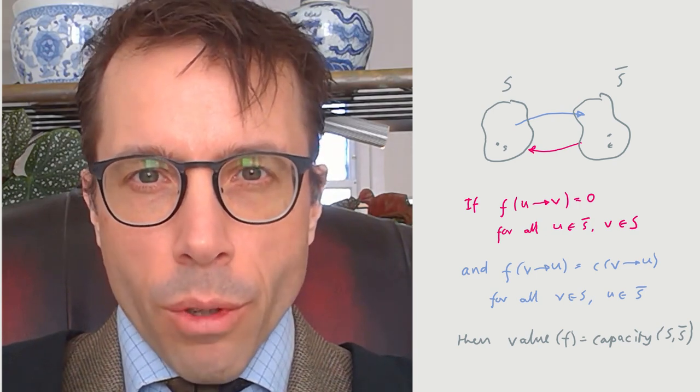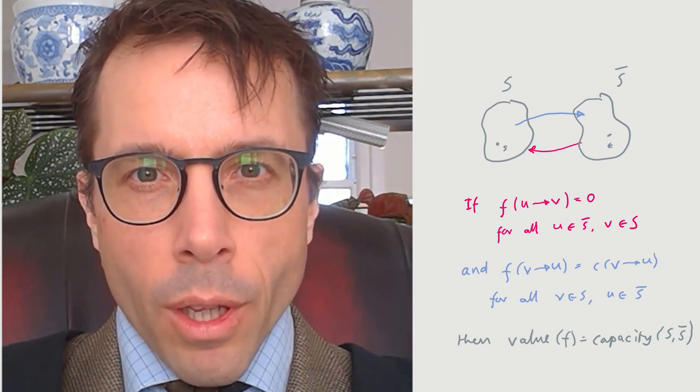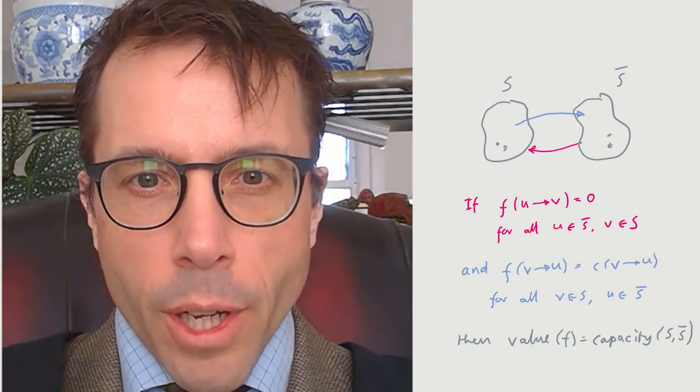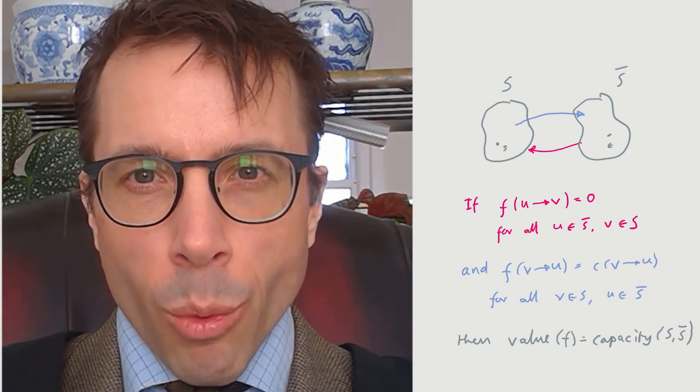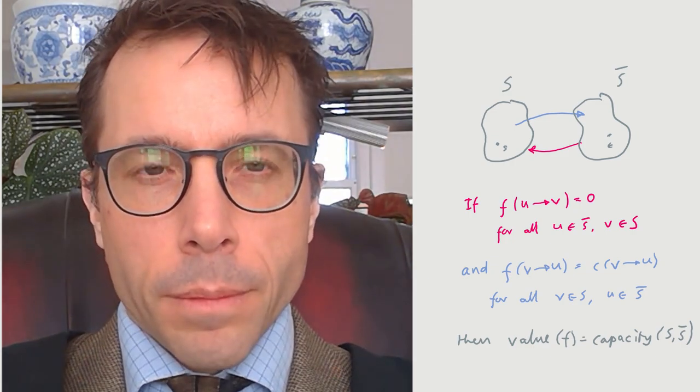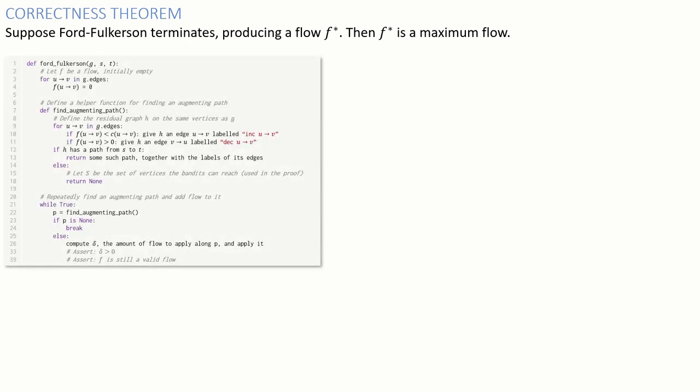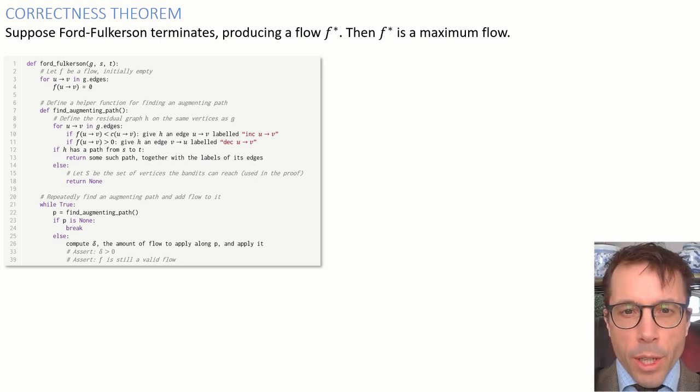And that is how we're going to prove that the Ford-Fulkerson algorithm is correct. We'll simply look at the flow it finishes with, and we'll look at the set that it discovered during the final sweep of breadth-first search, and we'll verify that these two inequalities are tight, and then we're done. Good, so let's write it out. We'd better start by stating the theorem we want to prove and by giving its source code. We want to think about what's happening in the final pass of the algorithm, the pass where it fails to find an augmenting path. Let's remind ourselves how the algorithm works.